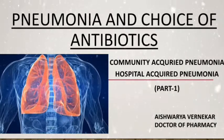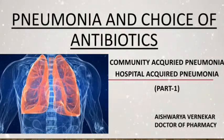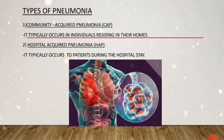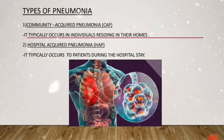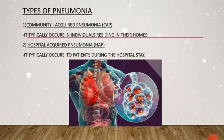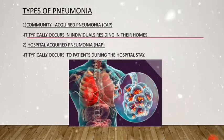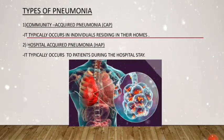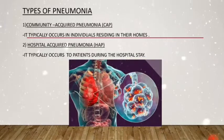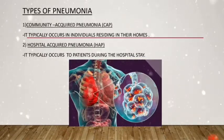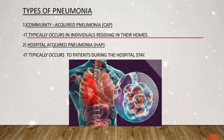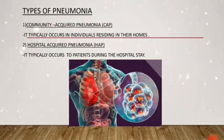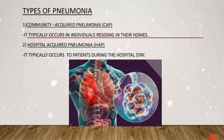It's time to discuss the most common infection — pneumonia — and the choice of antibiotics. Pneumonia is a form of acute respiratory infection that affects the lungs. The lungs are made up of small sac-like structures called alveoli, which fill with air when a healthy person breathes. When an individual has pneumonia, the alveoli are filled with pus and fluid, which makes breathing painful and limits oxygen intake.